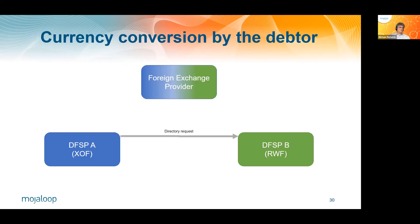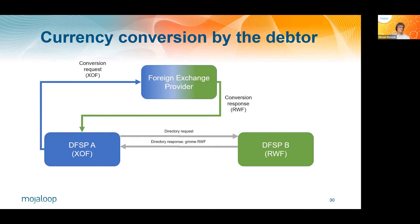So that basically works like this: we do a directory request, get a response for our local Rwandan francs, currency conversion request in West African francs, response in Rwandan francs, and a transfer in Rwandan francs.